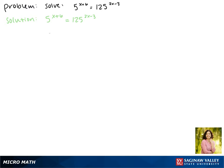So the left side will stay the same as 5 to the x plus 6, but 125 is 5 to the 3rd power. So we'll write this as 5 to the 3rd to the 2x minus 3.